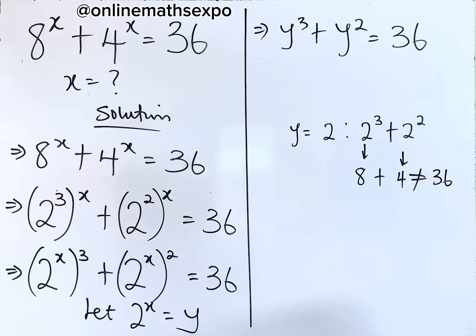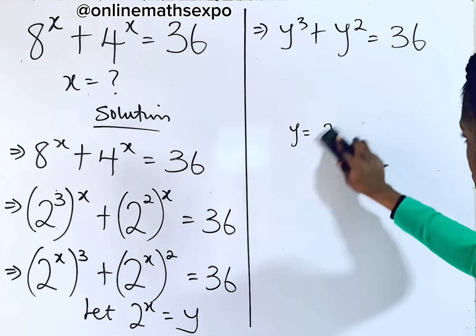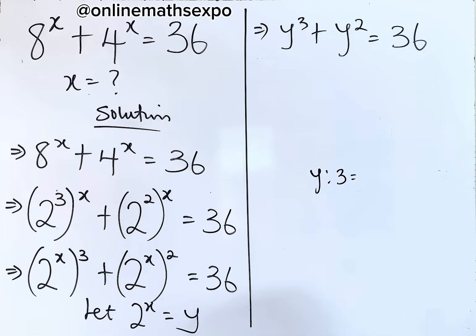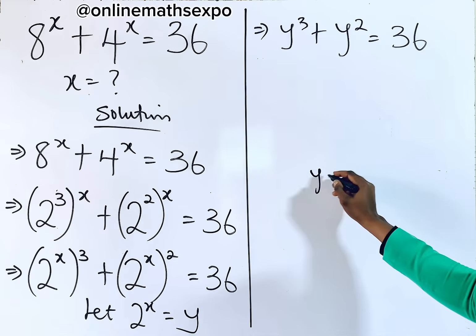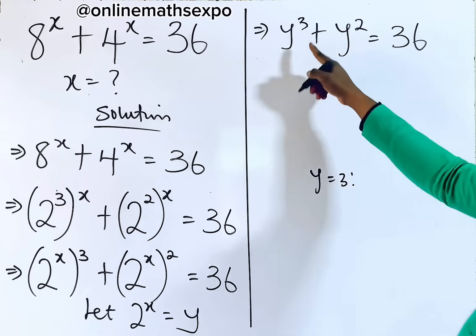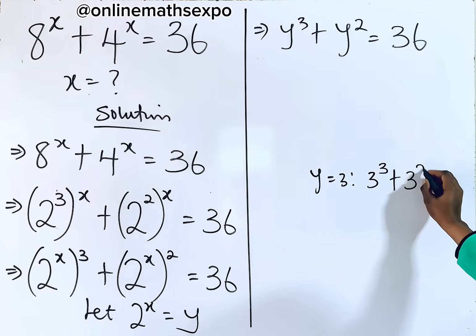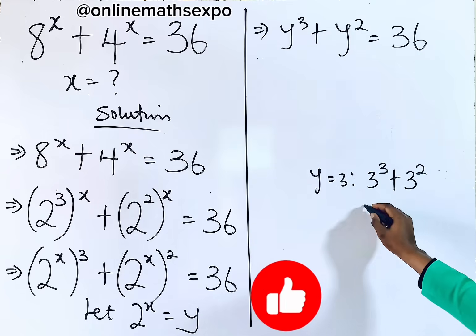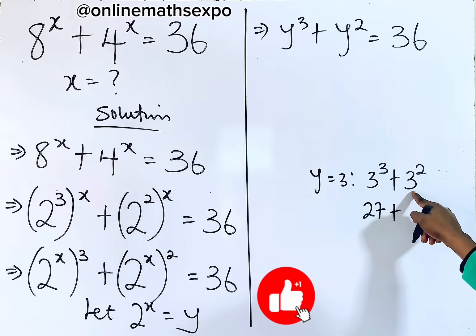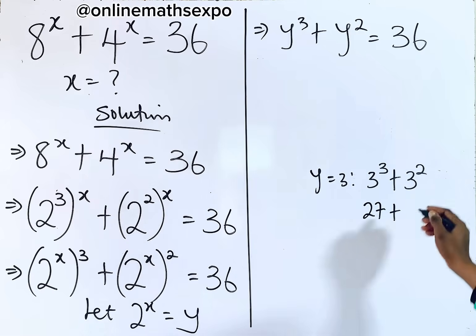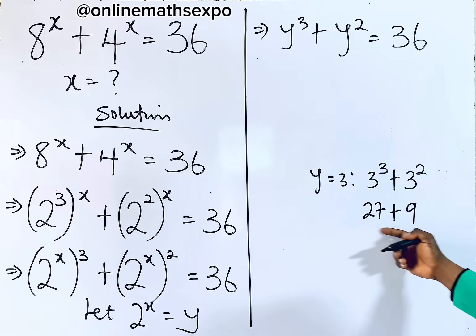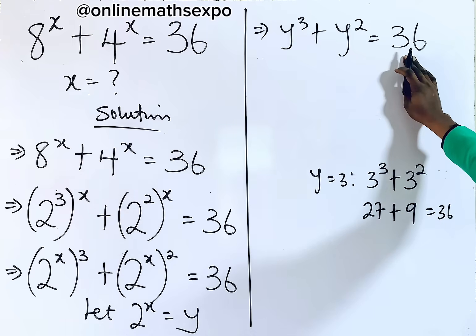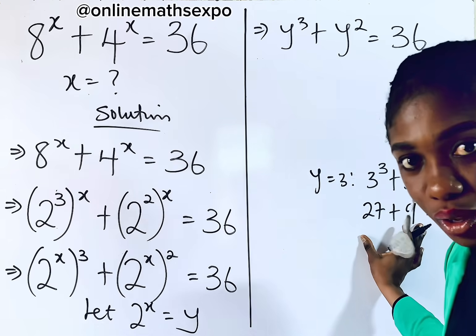Now I'm going to also check y equals 3. We have 3 cubed plus 3 squared. 3 cubed is 3 multiplied 3 times, giving us 27. And 3 squared is 3 multiplied 2 times, giving us 9. And when you add these, it gives you 36. So y equals 3 works.